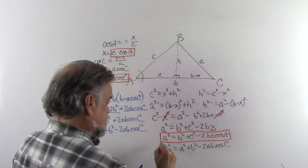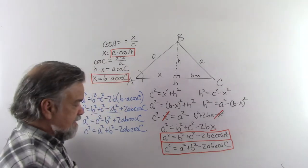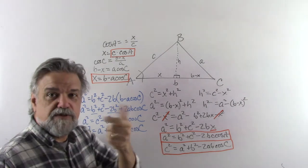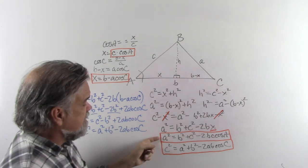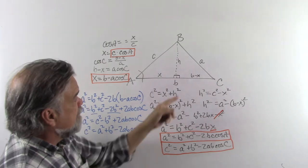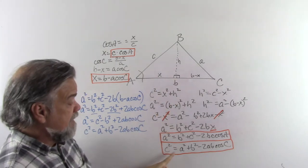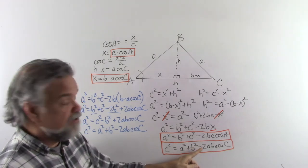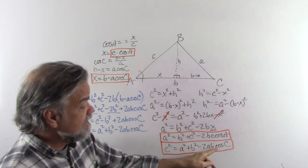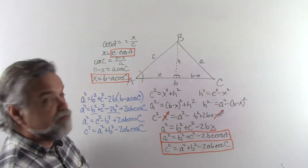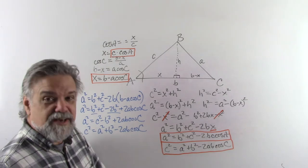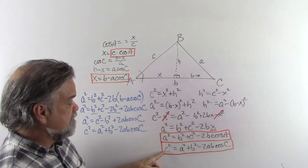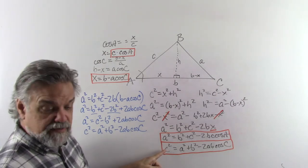Look at this — these are the exact same form. I've just switched my A's and my C's. What I'm getting is: if I want to find one side squared, I take the sum of the squares of the other two sides, and then subtract 2 times the product of those other two sides times the cosine of the opposite angle from that side. So now I'm wondering: can I get a similar answer for B squared? Let's find out.